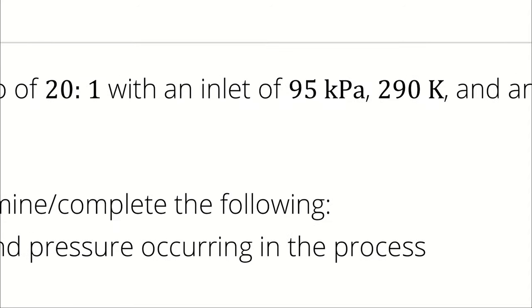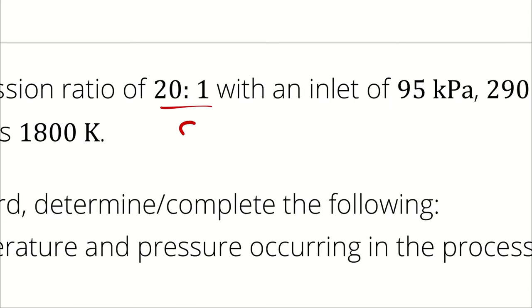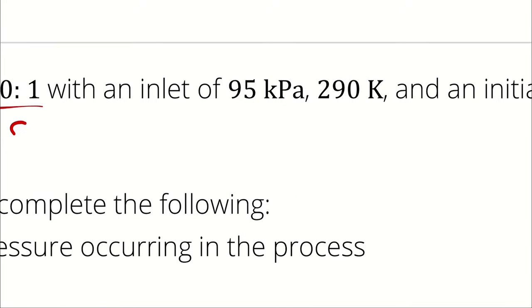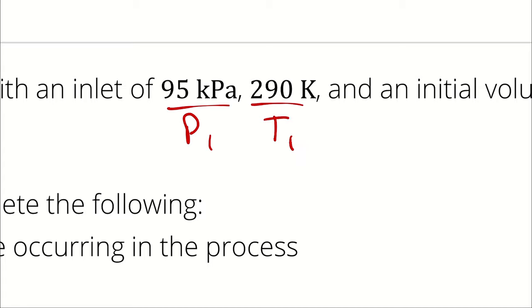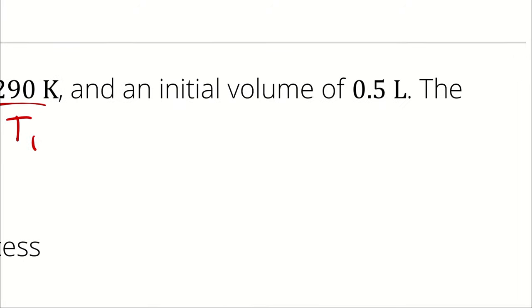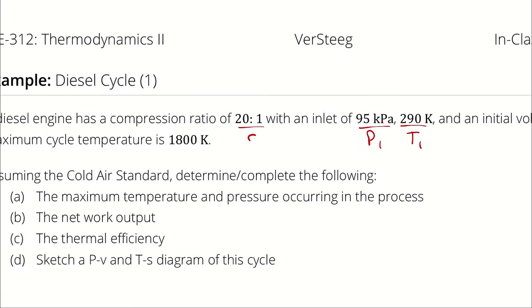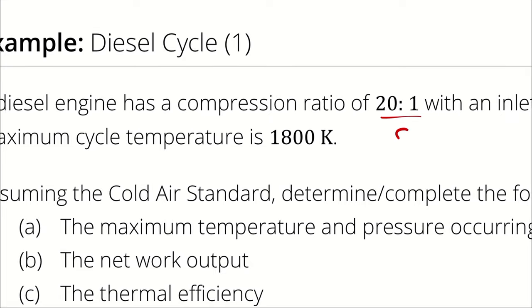We can parse out what we know. The 20-to-1 ratio is the compression ratio. The inlet pressure of 95 kilopascals corresponds to P1, the pressure of the air before compression. Likewise, the 290 kelvin temperature represents the temperature of the air as it enters the engine before compression, making it T1. We also have an initial volume of 0.5 liters, and the maximum temperature is 1800 kelvin.